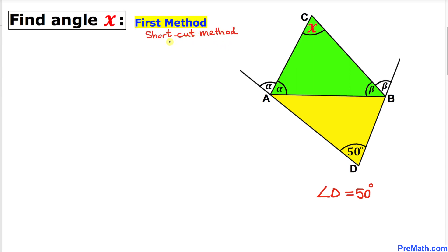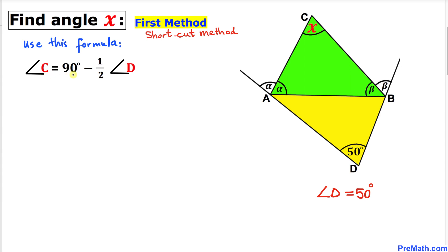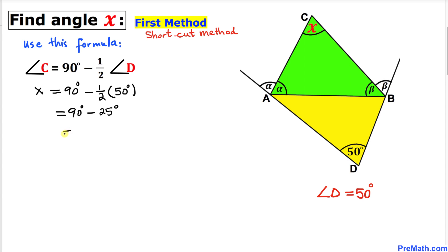Here is our very first method, also called the shortcut method. We will be using this formula to calculate angle X instantly. The formula states: angle C equals 90 degrees minus one half times angle D. This is our angle C and this is our angle D. In our case angle C is X, so X equals 90 degrees minus one half times 50 degrees, which gives us 65 degrees.